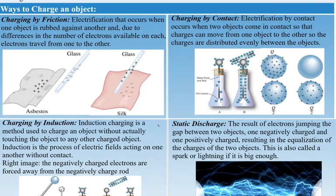There are different ways to charge objects. You can charge by friction — for example, glass and asbestos or silk and glass. Different materials distribute charge differently. If glass and asbestos are in contact with friction, asbestos becomes positively charged and glass negatively charged. With glass and silk, glass becomes positive and silk becomes negative. You don't have to memorize this; just know friction is one way to charge materials.